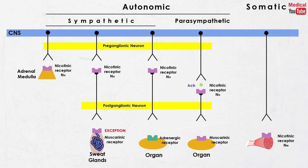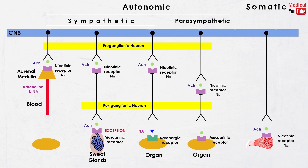So acetylcholine exists at all ganglia, somatic nerve endings, parasympathetic nerve endings, and sympathetic nerve endings innervating sweat glands. Noradrenaline exists at the nerve endings of sympathetic neurons, and is excreted along with adrenaline from the adrenal medulla directly into the blood.